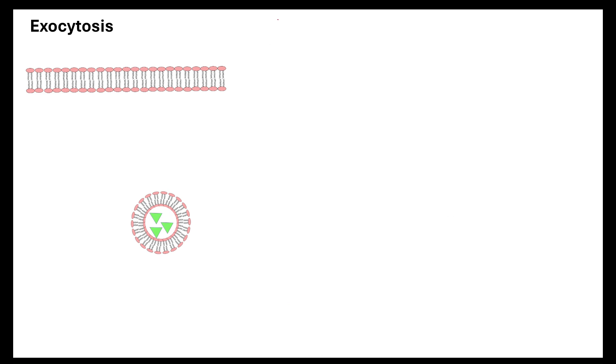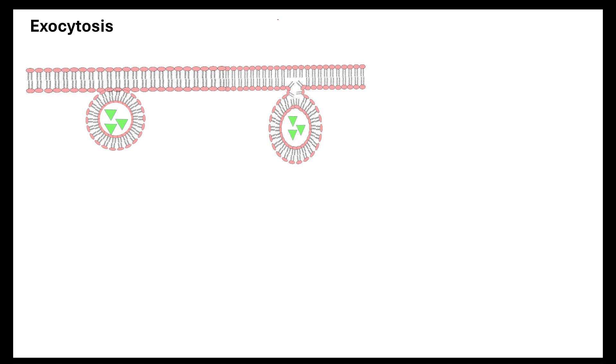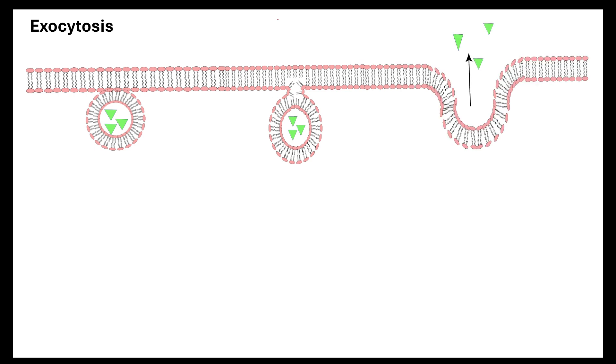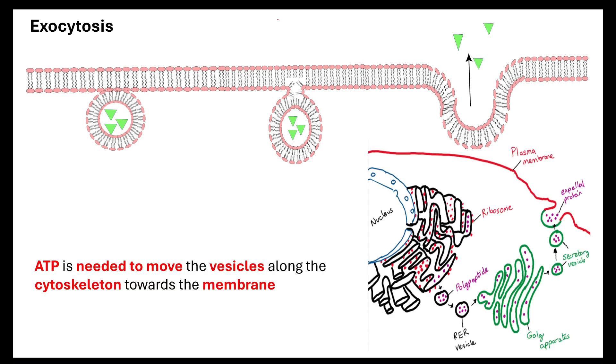So if we take a step back and remind ourselves that that is a form of exocytosis where a protein has been produced, has been modified and packaged into an excretory vesicle. That excretory vesicle will then be able to fuse with the membrane and that will then allow for the release of whatever that protein may be. And it's important that we remember the ATP is needed to move these vesicles along the cytoskeleton towards the membrane.